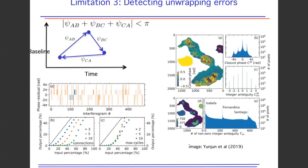Here are plots from Yunjun on the ability to estimate phase unwrapping errors. The x-axis shows the input percentage of the image that has unwrapping errors, and the output shows how much was corrected. You'll also talk more about this when you get to the MintPy exercise. These redundancy checks are really useful for phase unwrapping error detection.